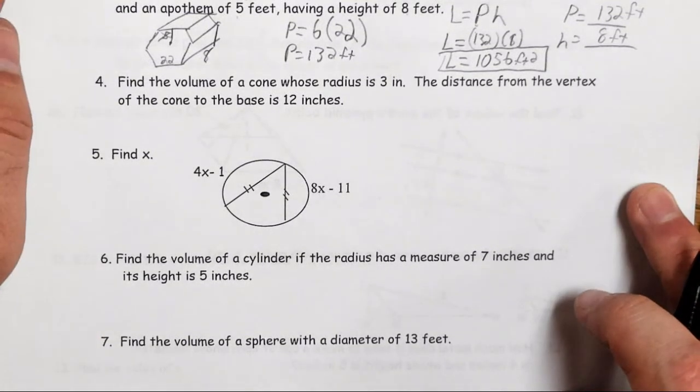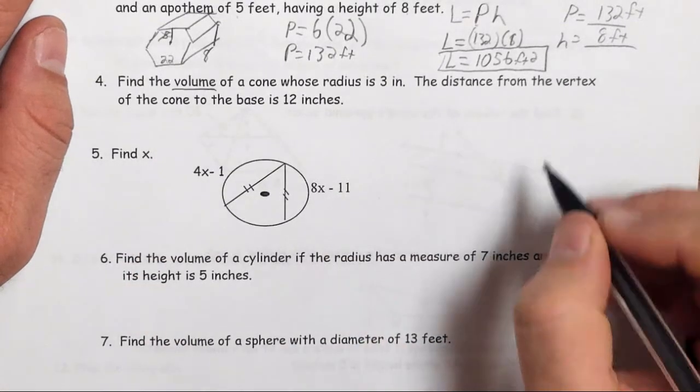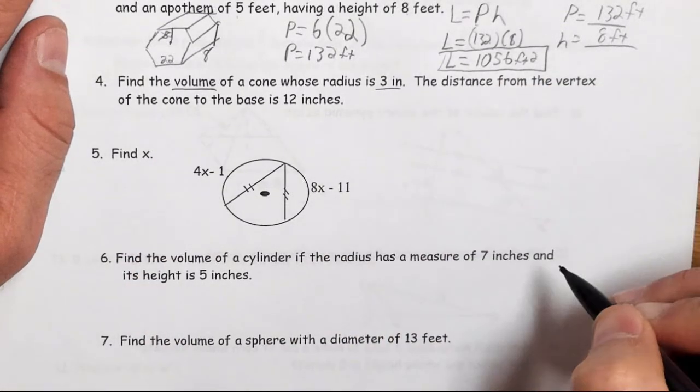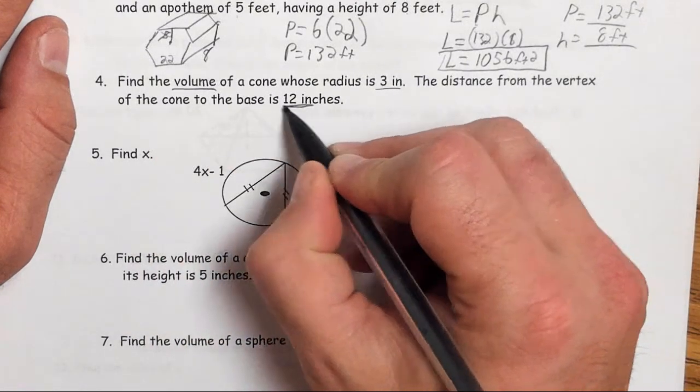Welcome back Patriots. Moving on to number 4. Find the volume of a cone whose radius is 3 inches. The distance from the vertex of the cone to the base is 12 inches.